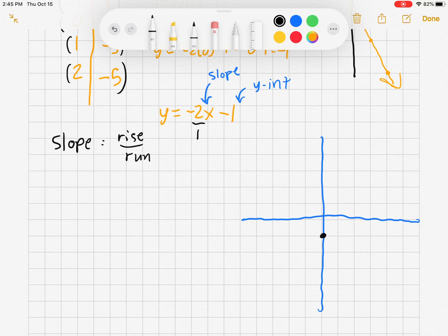So notice we change in the y-direction. Our rise, negative 2, 1, 2. And our run is 1. Our rise is 1, 2. Our run is positive 1. Connect the dots.